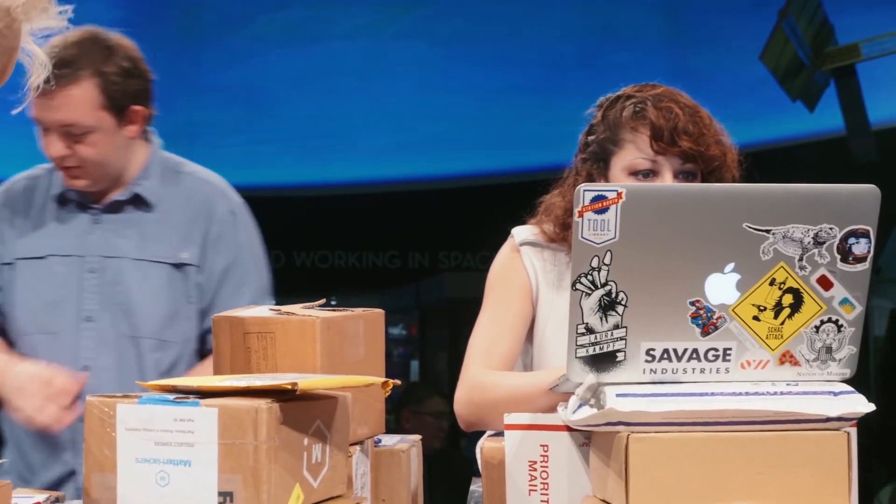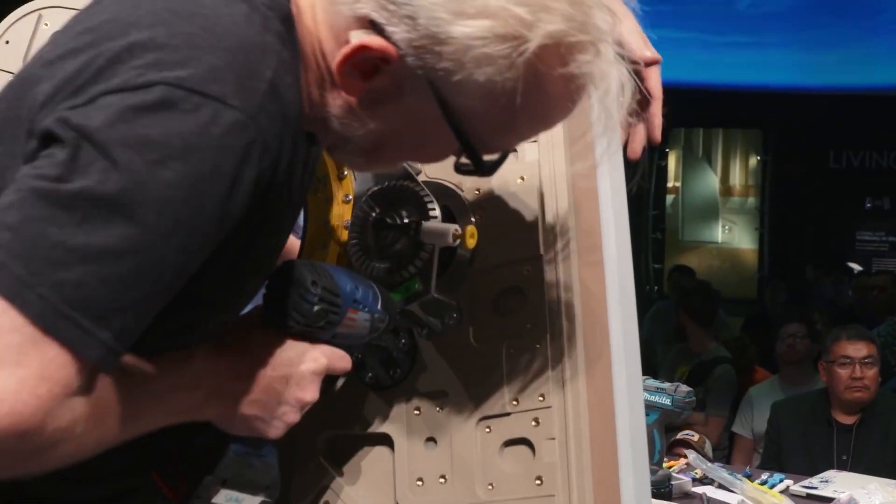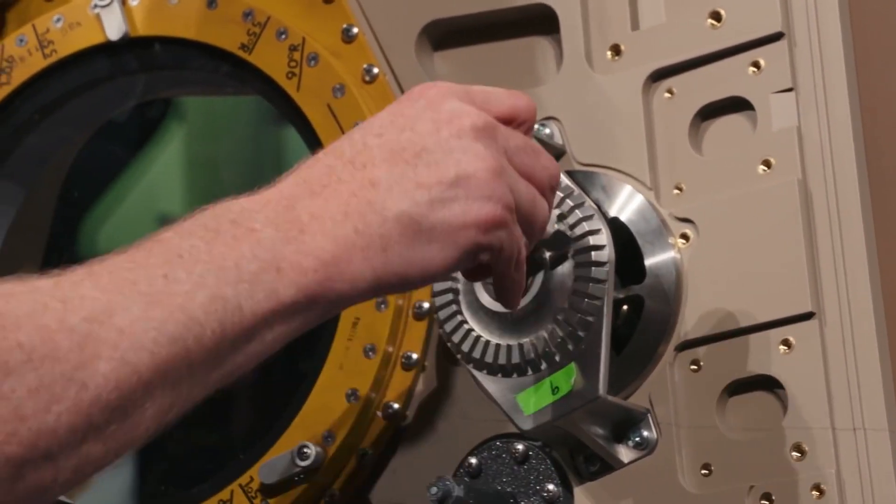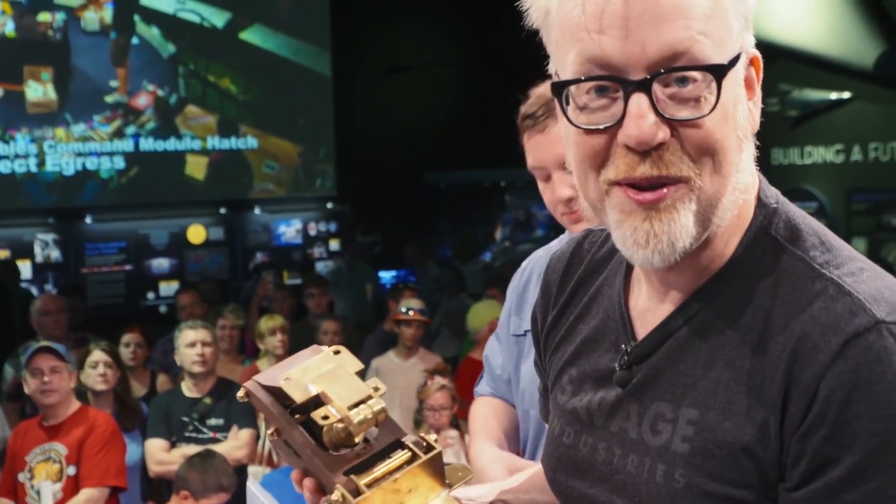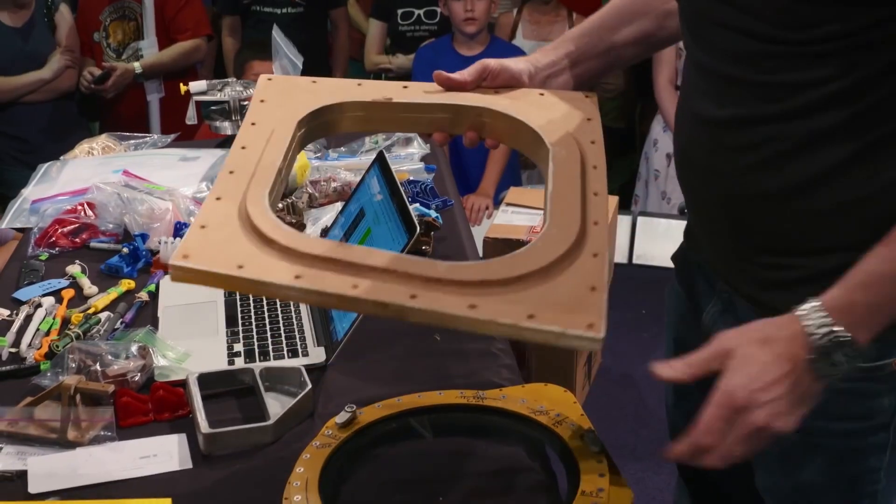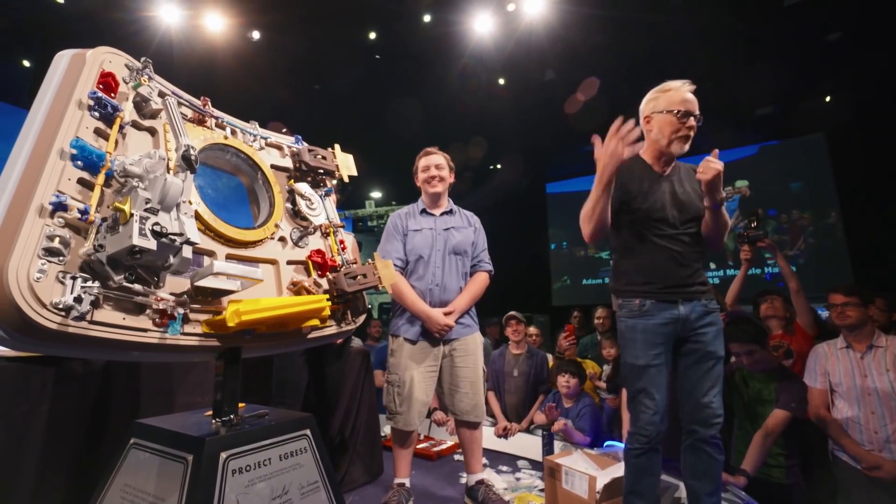Adam Savage and a team of makers assembling the Apollo 11 hatch replica. The build took place in front of a live audience at the Smithsonian, and oh yeah, I was there. Every part of the hatch was made by a different maker and profiles of everyone who participated are now live on the Tested website. Definitely head over there and check that out.